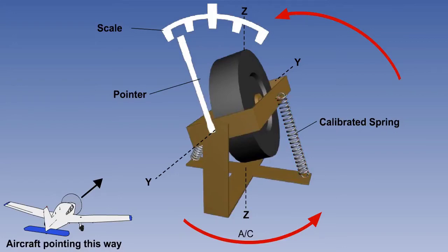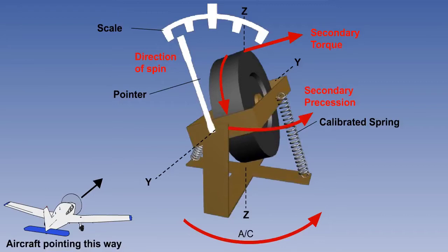The resulting spring tension subjects the frame to a secondary torque acting around the Y-Y axis. This secondary torque is also precessed through 90 degrees in the direction of rotor spin, to produce a secondary precession in the same direction as the aircraft is turning. Eventually, the spring torque will reach a value where it is producing a secondary precession equal to the rate of turn of the aircraft, and in the same direction.